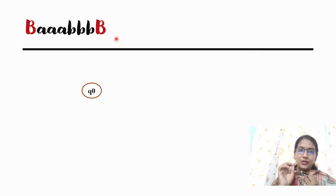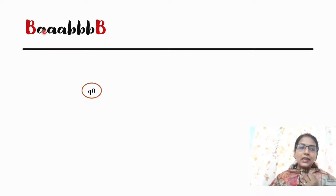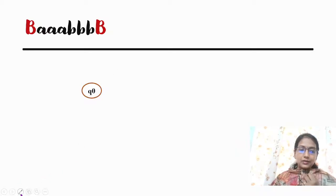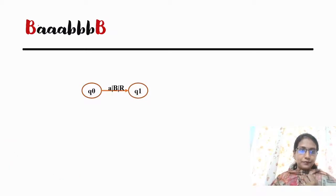We will start at state Q0. We will move on A. When A is raised and B is raised, we will always start with A. If A comes to A, then we will replace A with blank and move right.